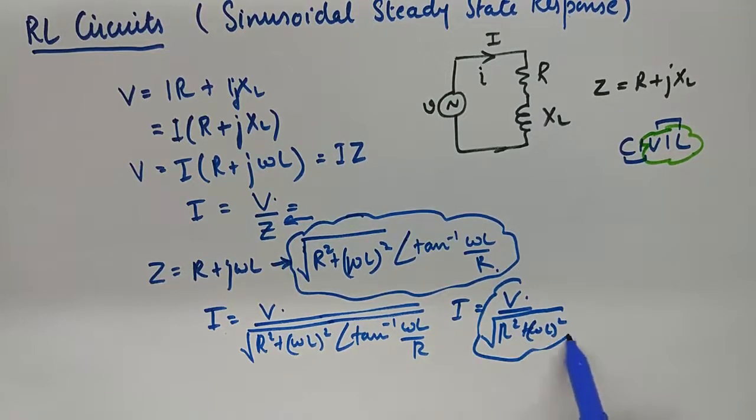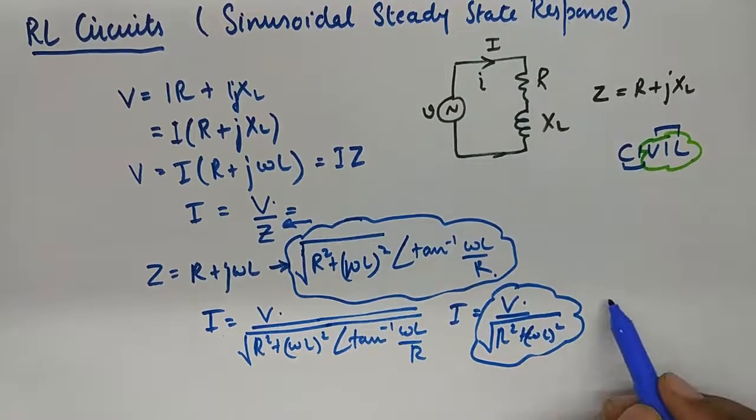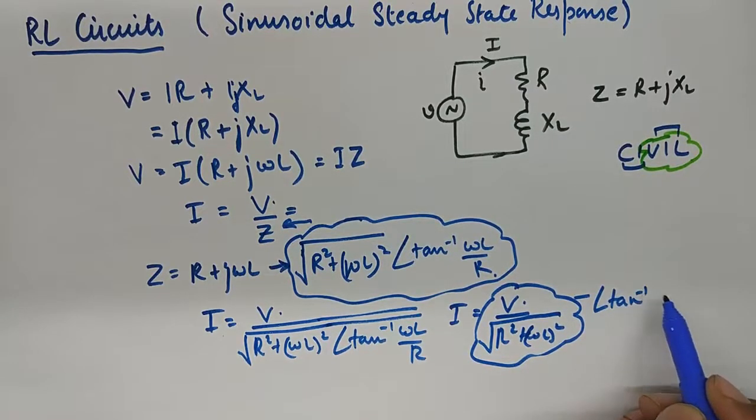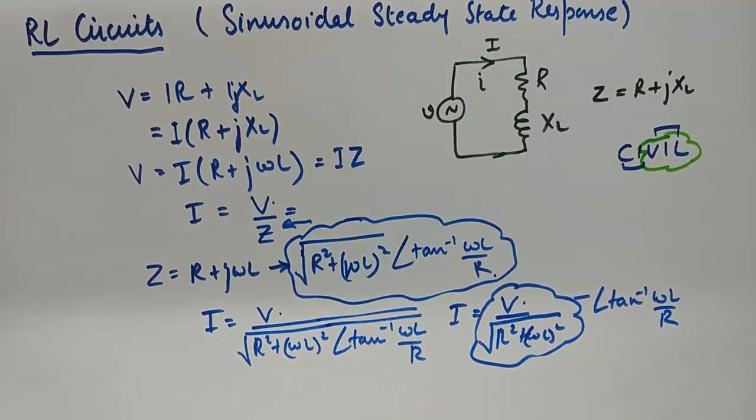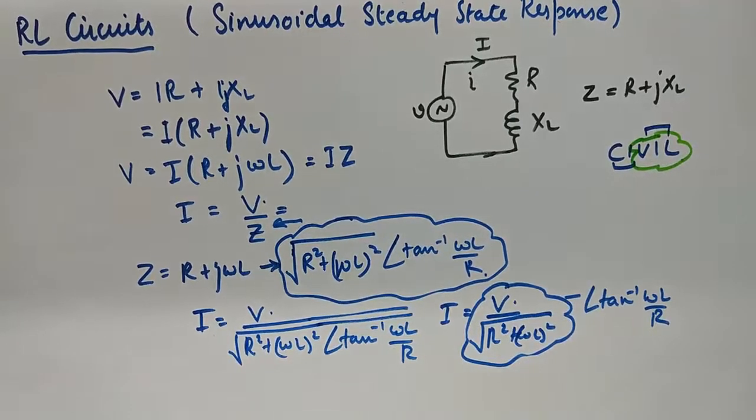This becomes my magnitude of the current, and my angle becomes a negative angle, which clearly suggests that my current is lagging the voltage, as opposed to what it was doing in the capacitive circuit.